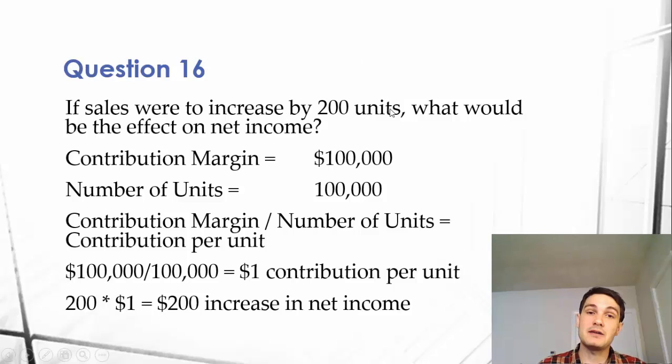Then, we know that we're just increasing by 200 units. So, we're increasing our contribution by 200. And that's $1 per unit. So, we get a $200 increase in net income.